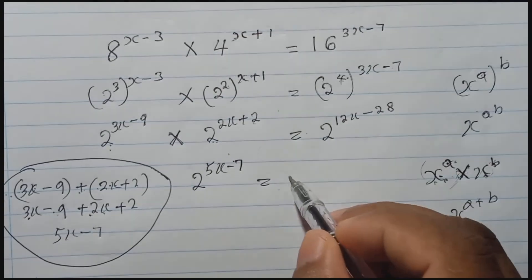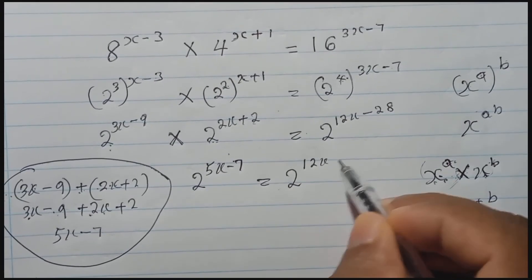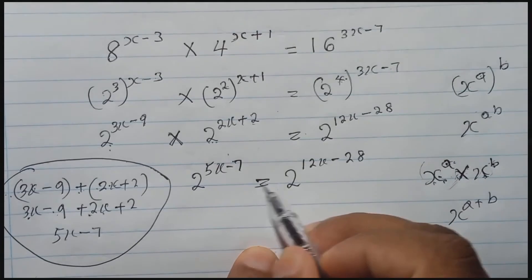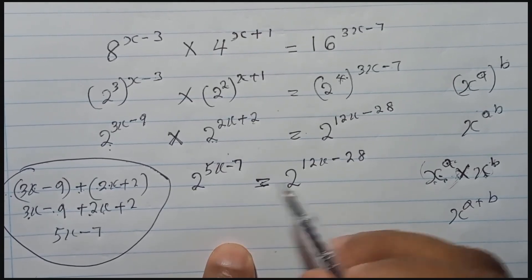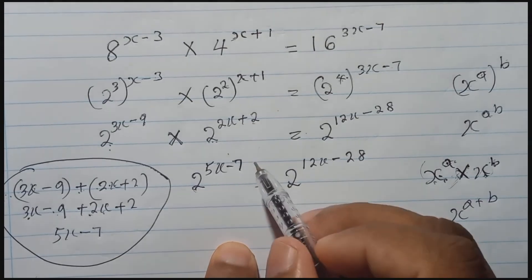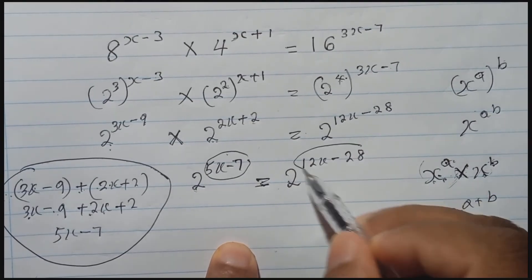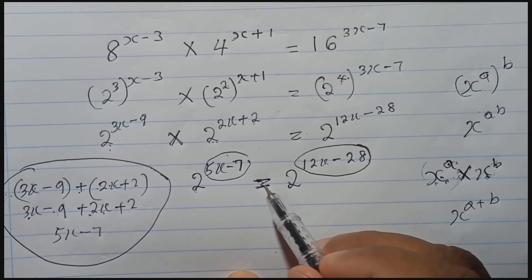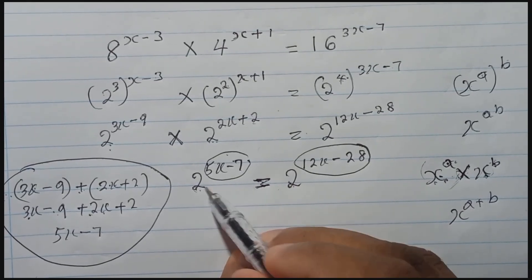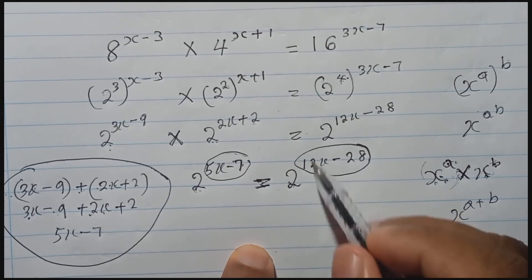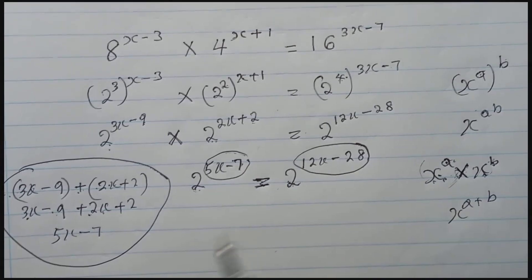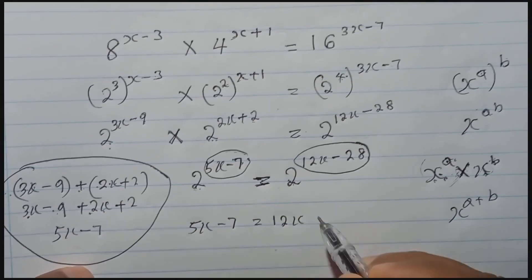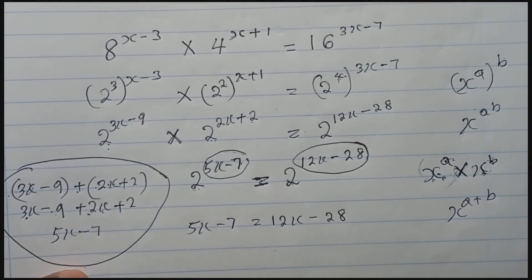On the right side, we have 2 to the power 12x minus 28. Now very carefully: we have an equal sign, and both sides have the same base 2. Since the bases are equal, the indices must also be equal. So we can write: 5x minus 7 equals 12x minus 28.